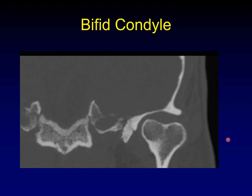You can get fractures of the condylar head that heal with malunion and look a lot like this, but usually if you see this configuration that I describe as a heart-shaped configuration in the coronal plane — this heart sign — usually you're dealing with a bifid condyle and not a healed previous fracture.